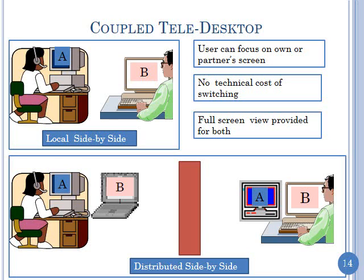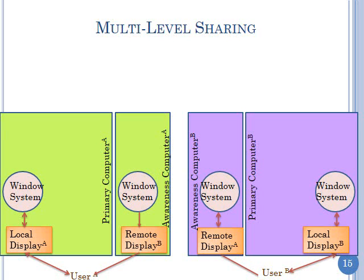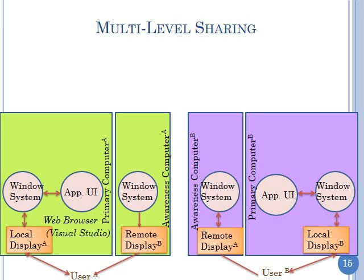We made this metaphor distributed by giving each user two computers: a primary computer for their own work, and a secondary awareness computer which shows the primary screen of the other user. In green we have the left user and in purple the right user. Each user has two computers — the primary and the awareness computer — and the displays are driven by a window system.